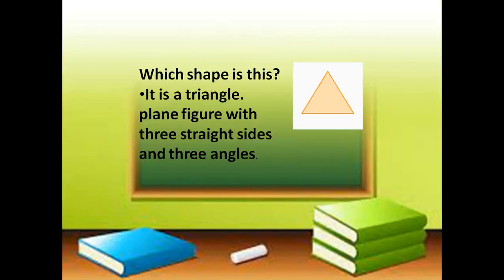Okay, so which shape is this? Yes, it is a triangle. Tri means three sides. A plain figure with three sides and three angles. Ek aisa shape, jiski kitni sides hai students? Three sides hai aur three angles hai. It means three corners hai iske.